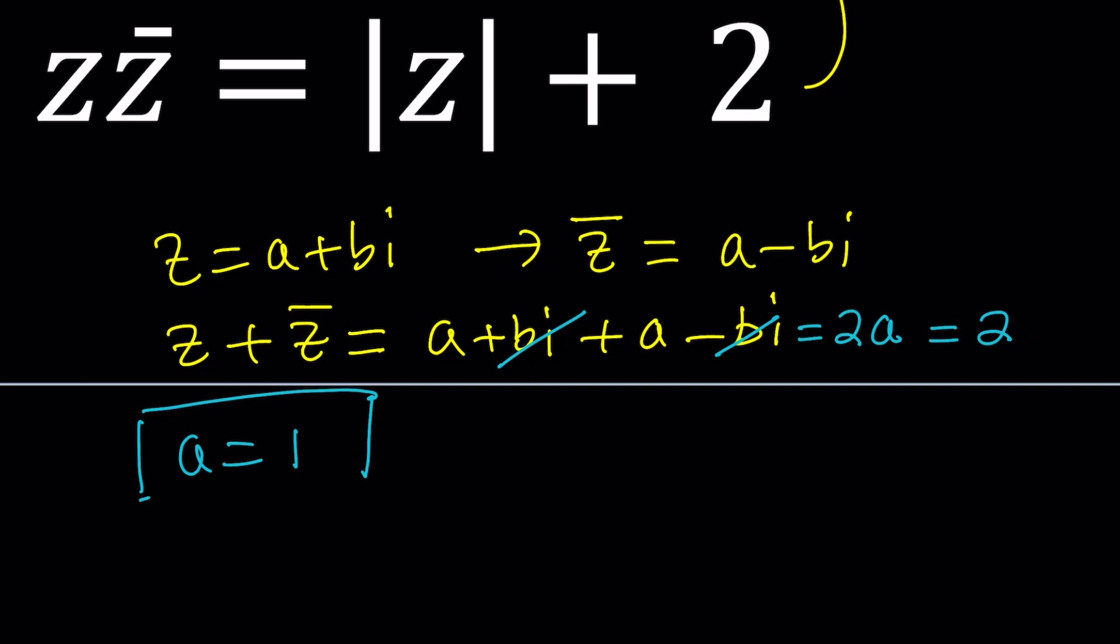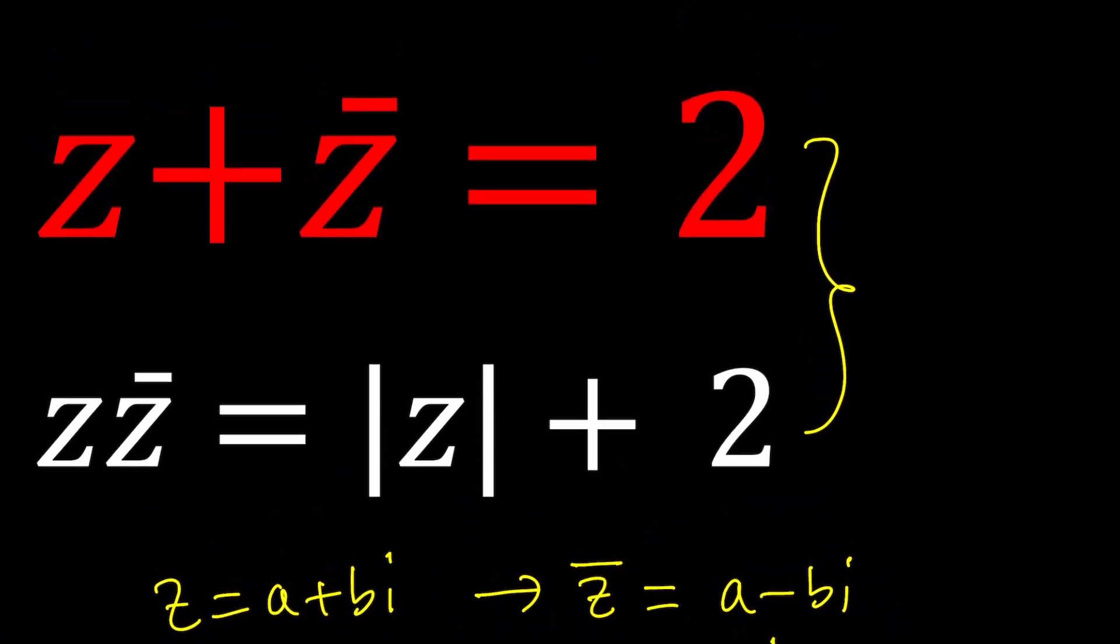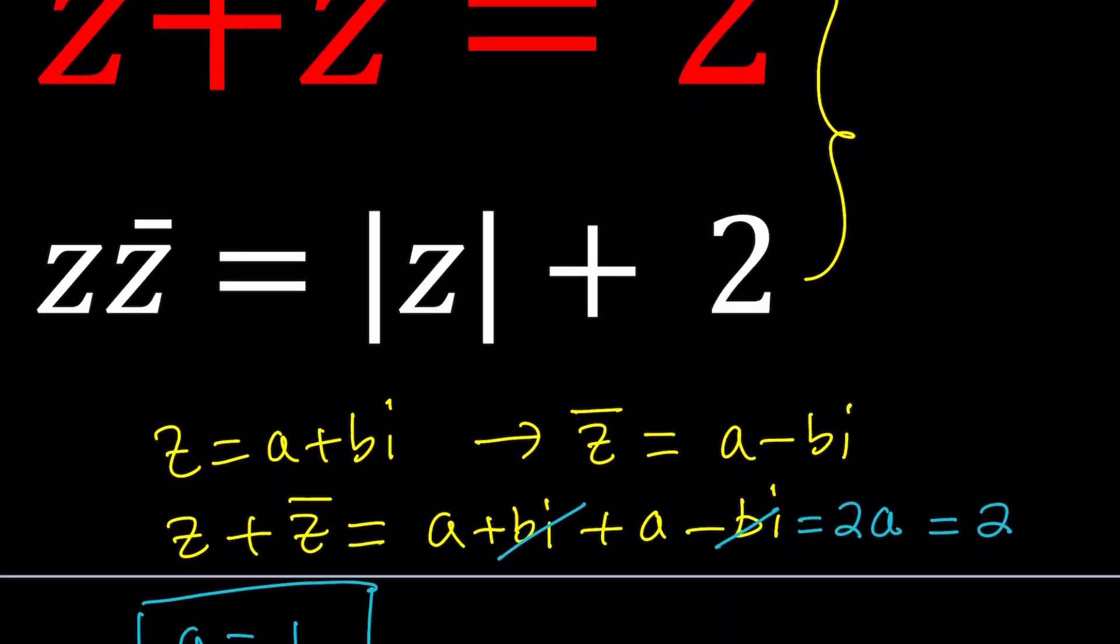So we've got the real part of our complex number z, which is 1. That's what the sum gives us. Because when you add a complex number and its conjugate, you don't just get an ordinary answer. You get two times the real part. And as you know, these two numbers have the same real part.